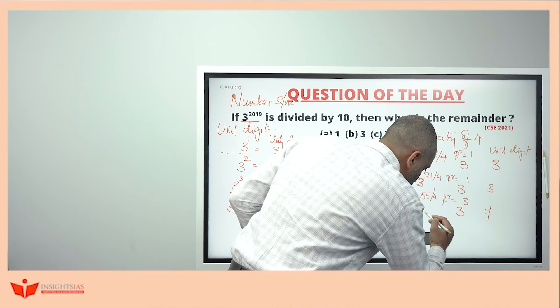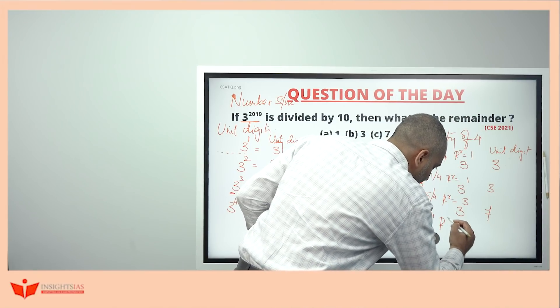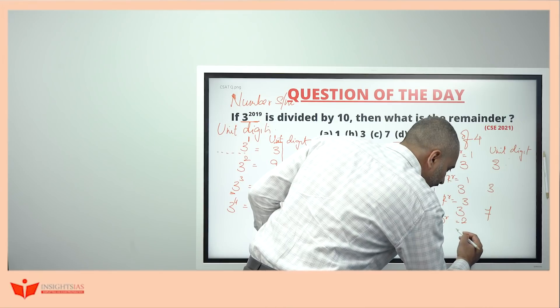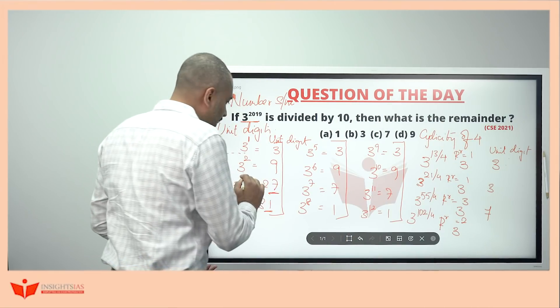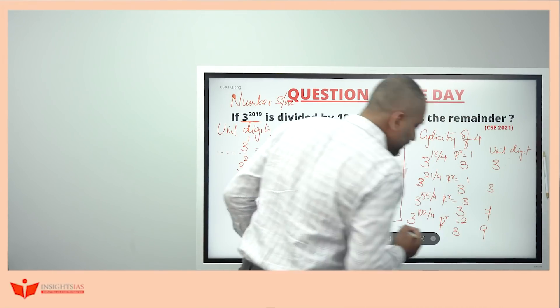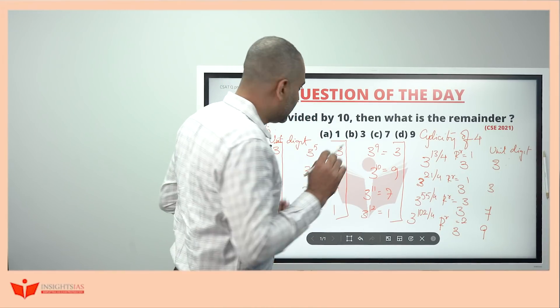3 power 102. When you divide this by 4, the remainder is 2. So, 3 square. What is 3 square? The unit digit here is 9.